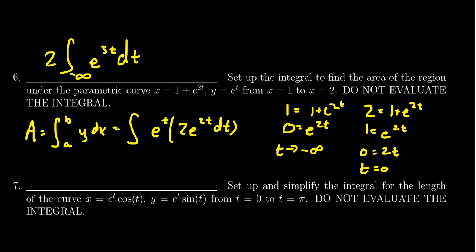And that then gives you the upper bound like so. And so then the integral to measure the area will be 2 times the integral from negative infinity to 0 of e to the 3t dt.